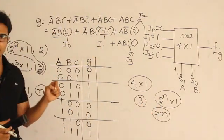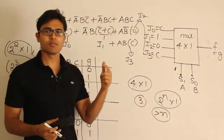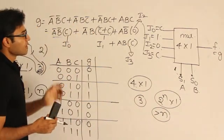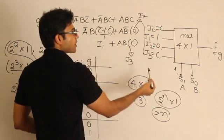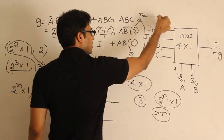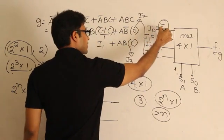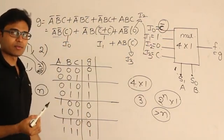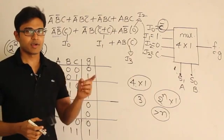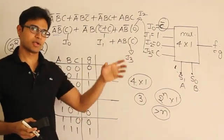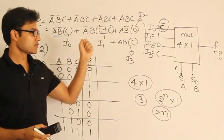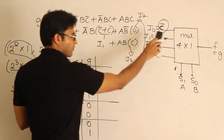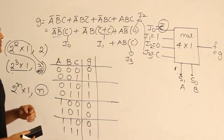So using a 2^n × 1 multiplexer we can implement functions with more than n variables. One thing to keep in mind: sometimes you may need extra gates at the inputs. For example, if i0 required c' instead of c, you would need a NOT gate externally. With extra gates, you can implement larger variable functions with smaller multiplexers.